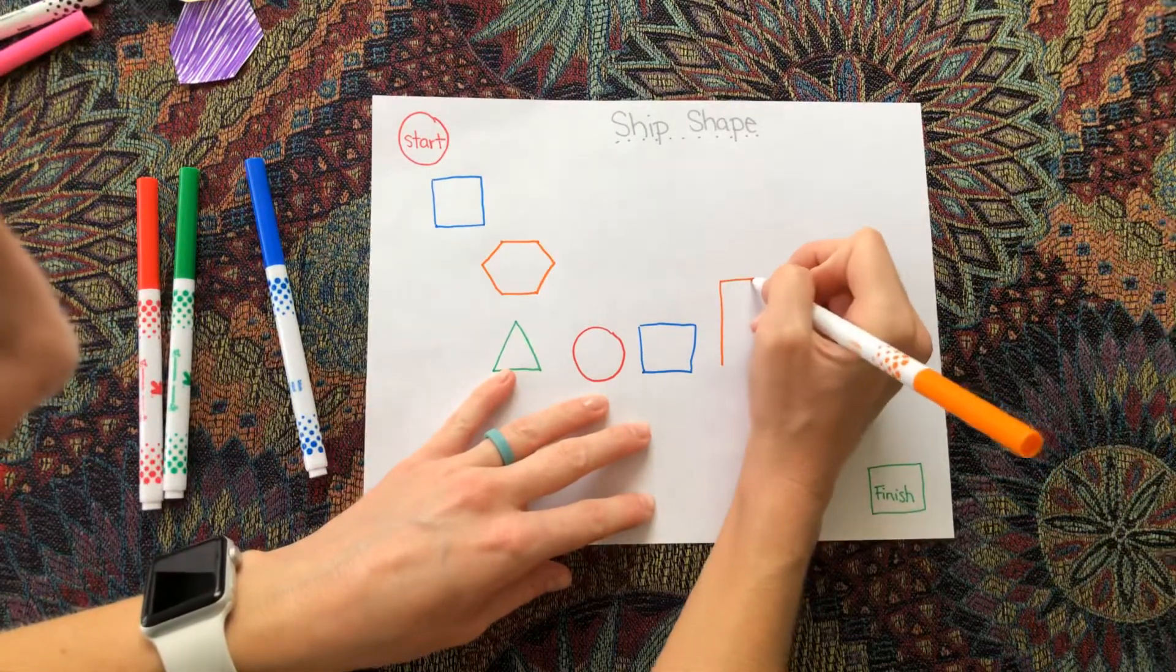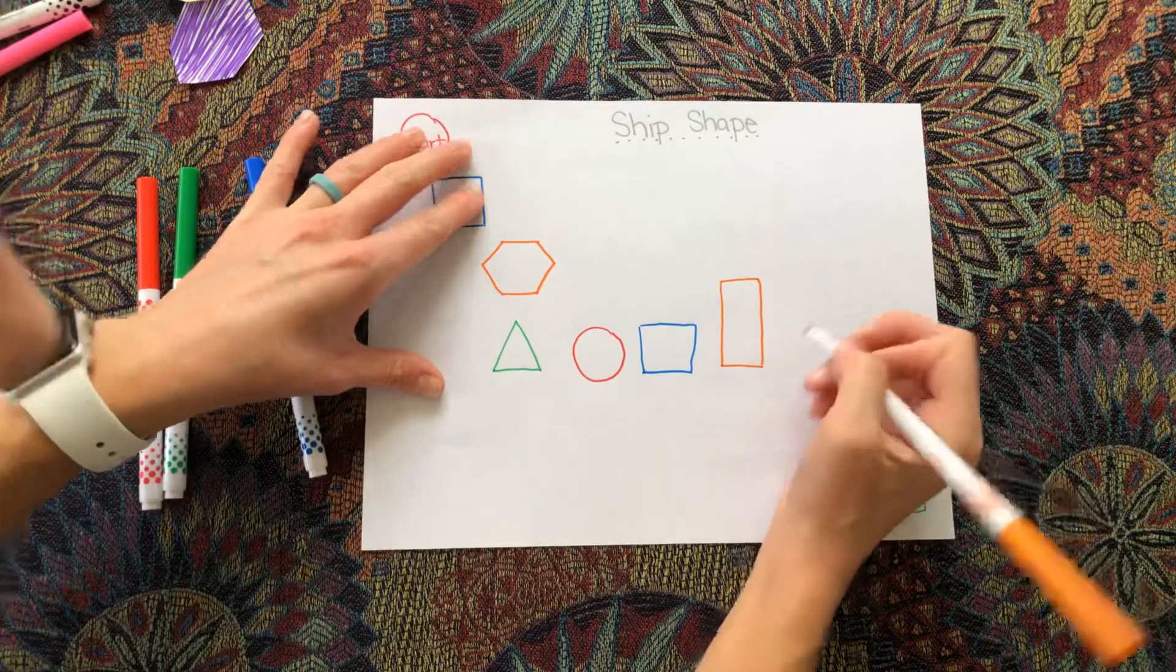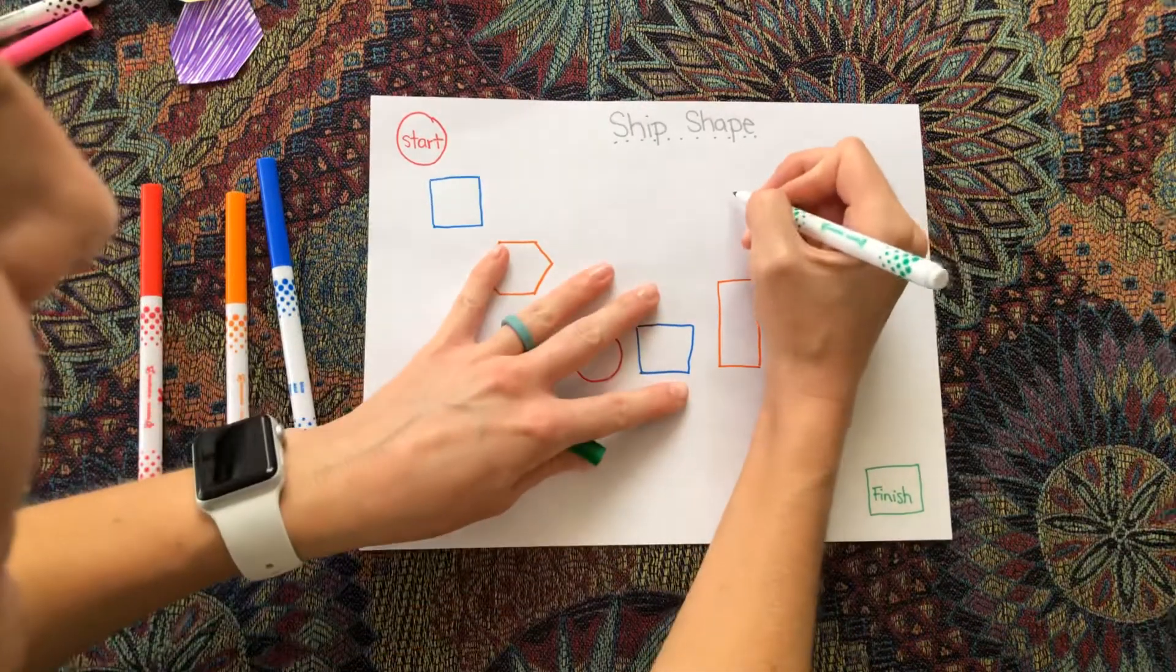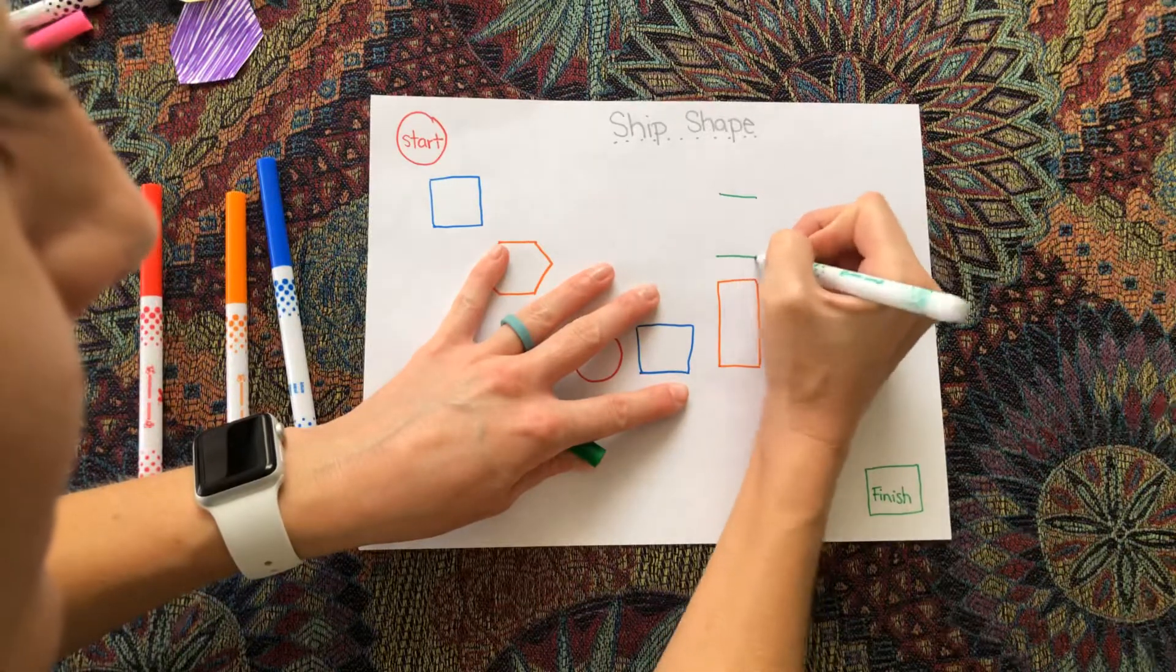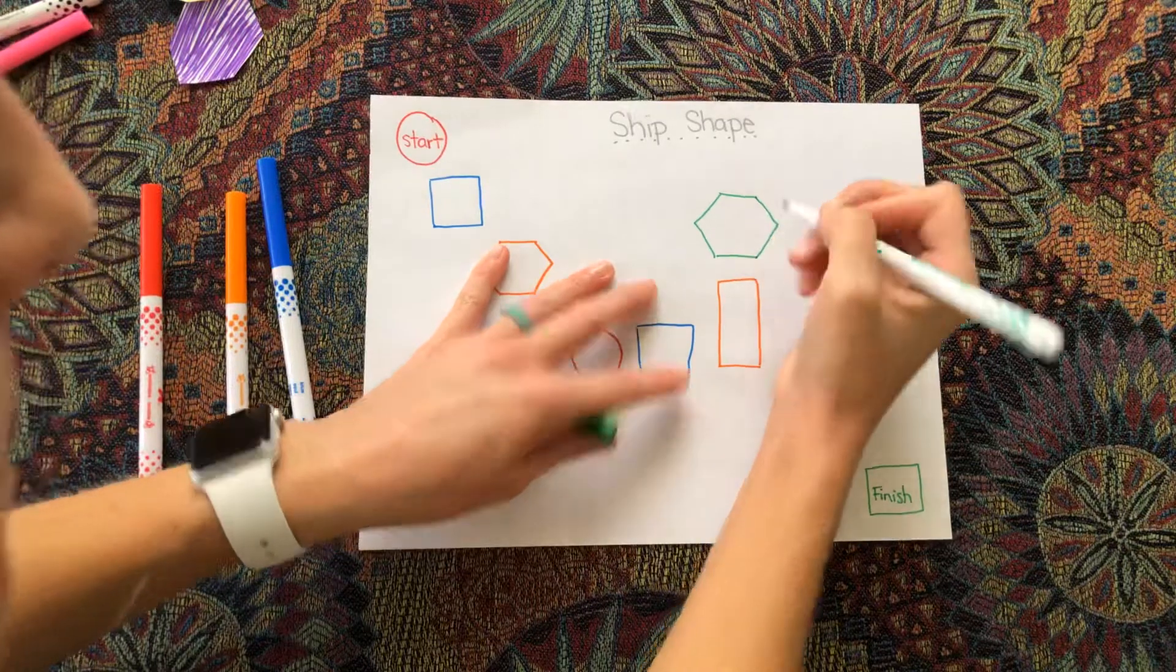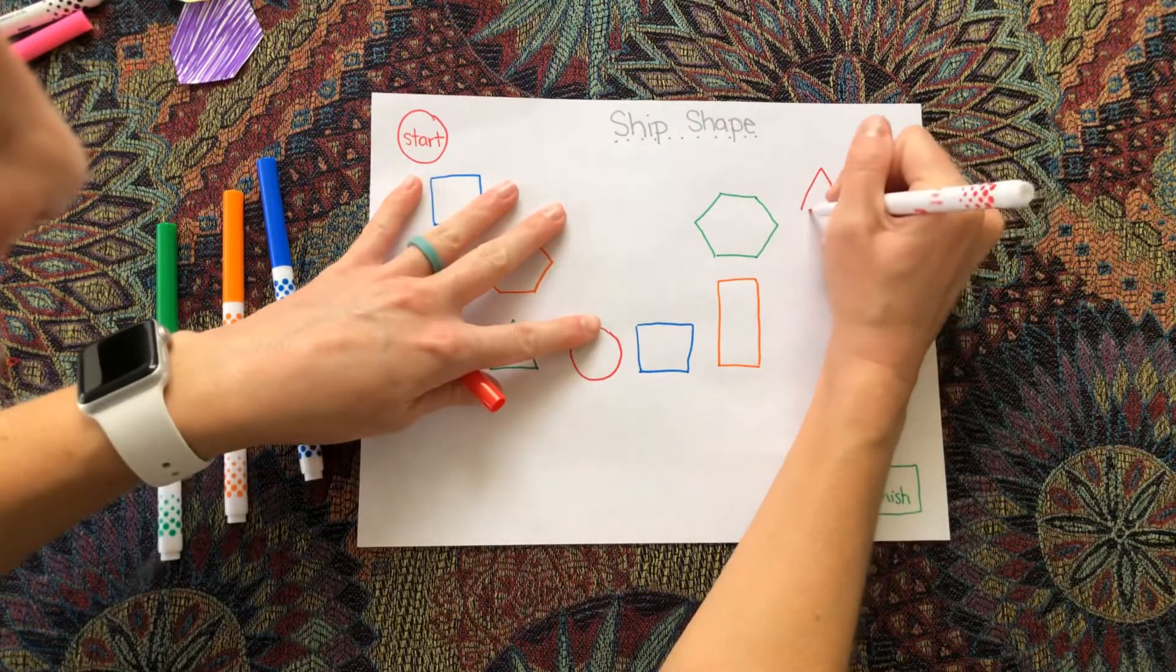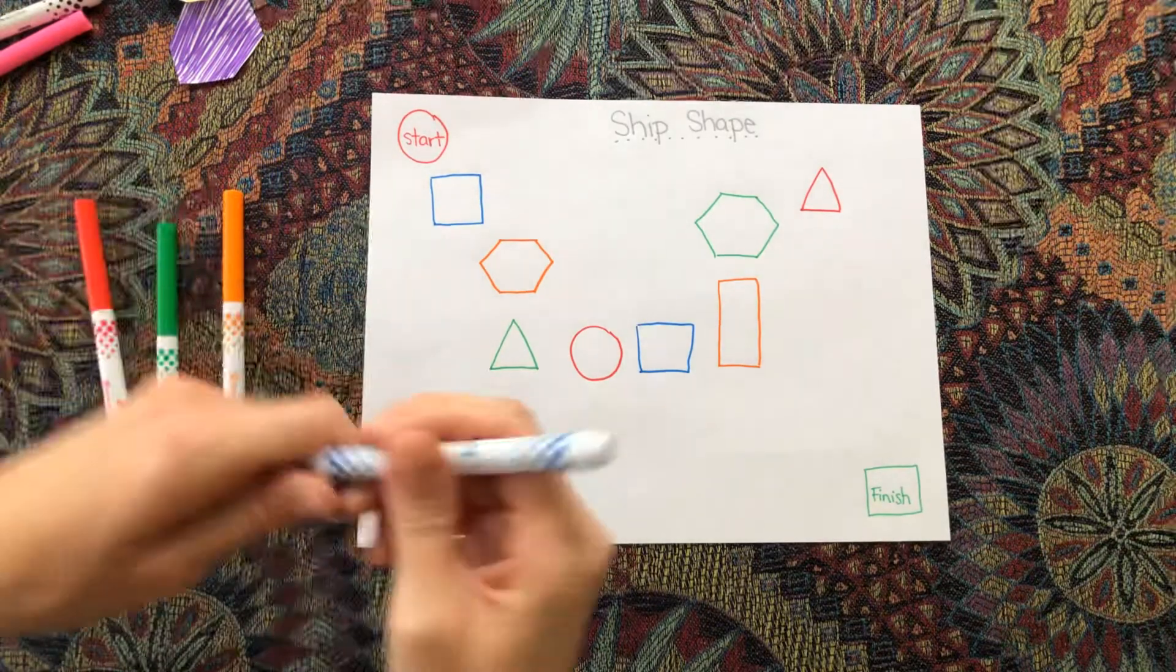So it kind of messed up my pattern a little bit. That's okay. Hexagon. Triangle. Triangle. Circle.